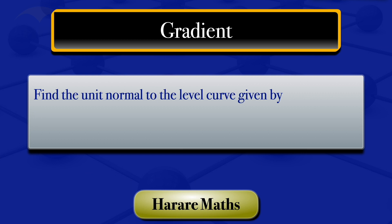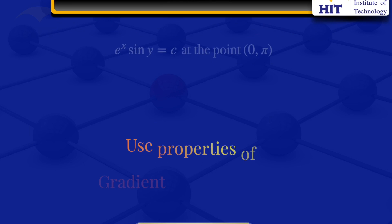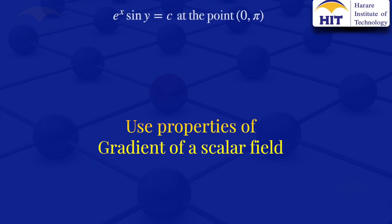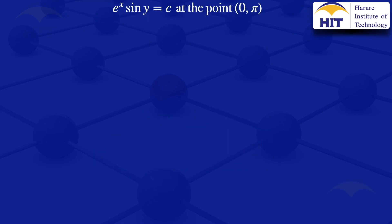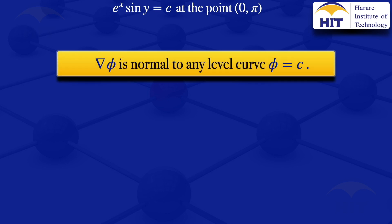In this video I'm going to find the unit normal to the level curve given by e^x · sin(y) equals a constant c at the point (0, π). To find that unit normal I would use the properties of the gradient of a scalar field. We know that the gradient of a scalar field φ is normal to any level curve φ equals a constant c.